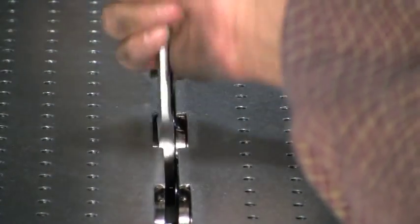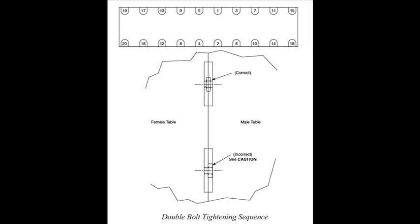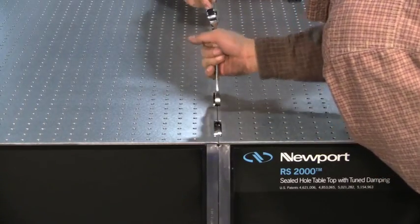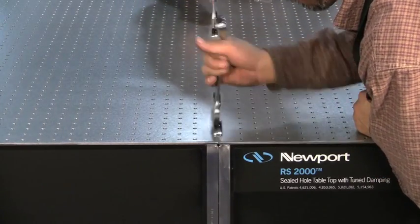After all the bolts are uniformly engaged and the table sections are in full contact, use the recommended staggered tightening sequence to apply final torque of 60 foot-pounds to all bolts. This sequence helps ensure uniform torque loading and proper mating of the plate. It is important that this sequence be followed carefully.